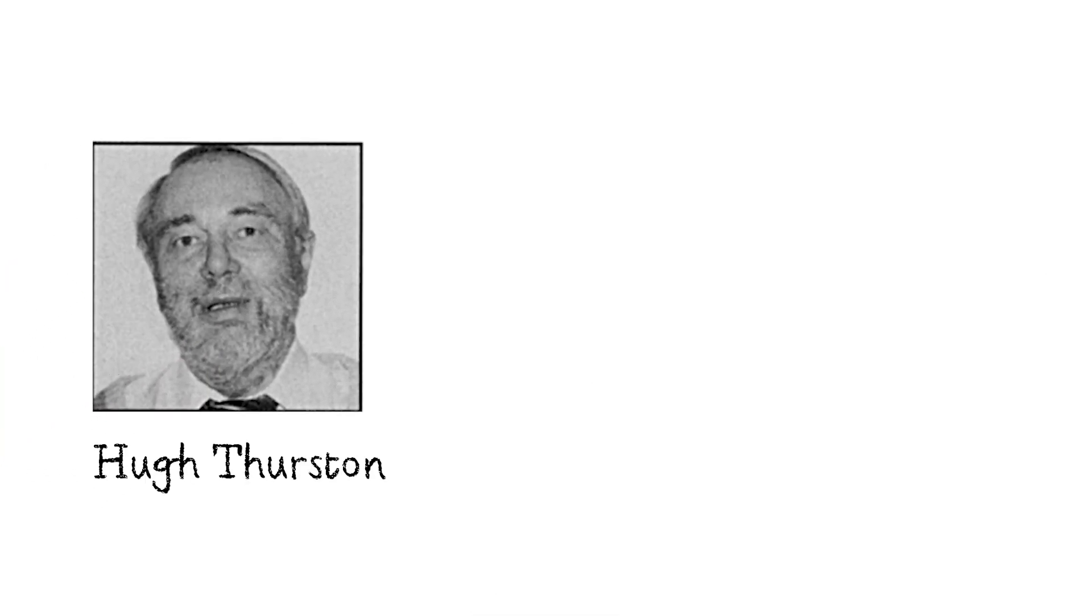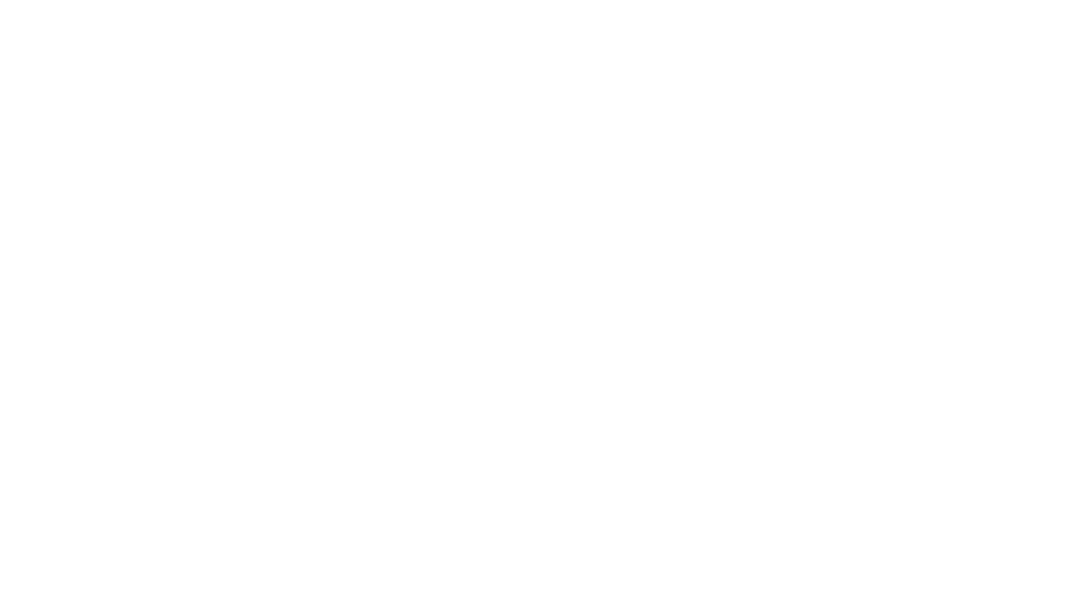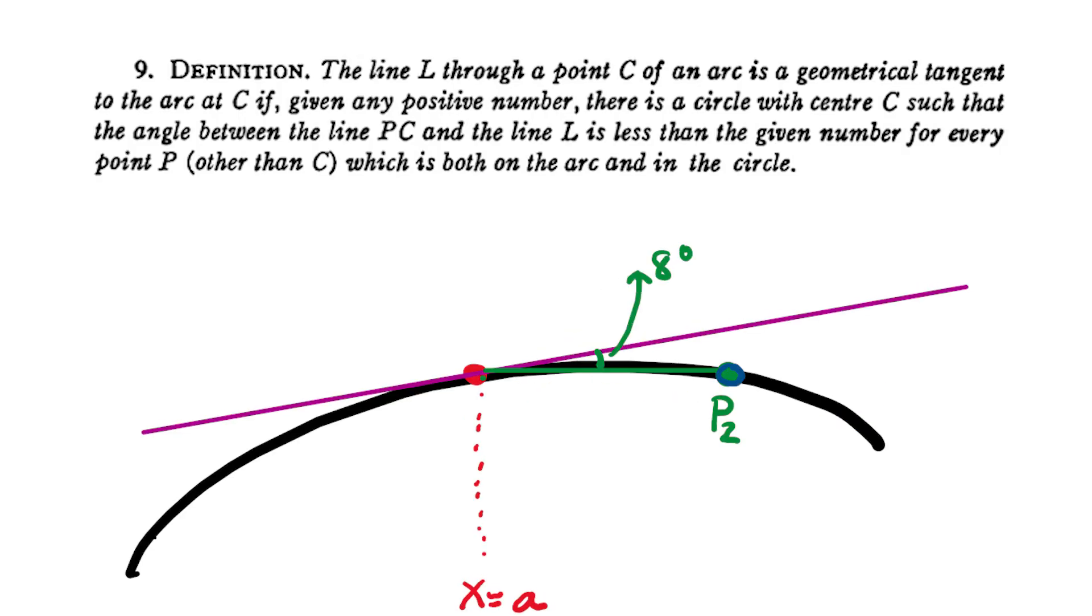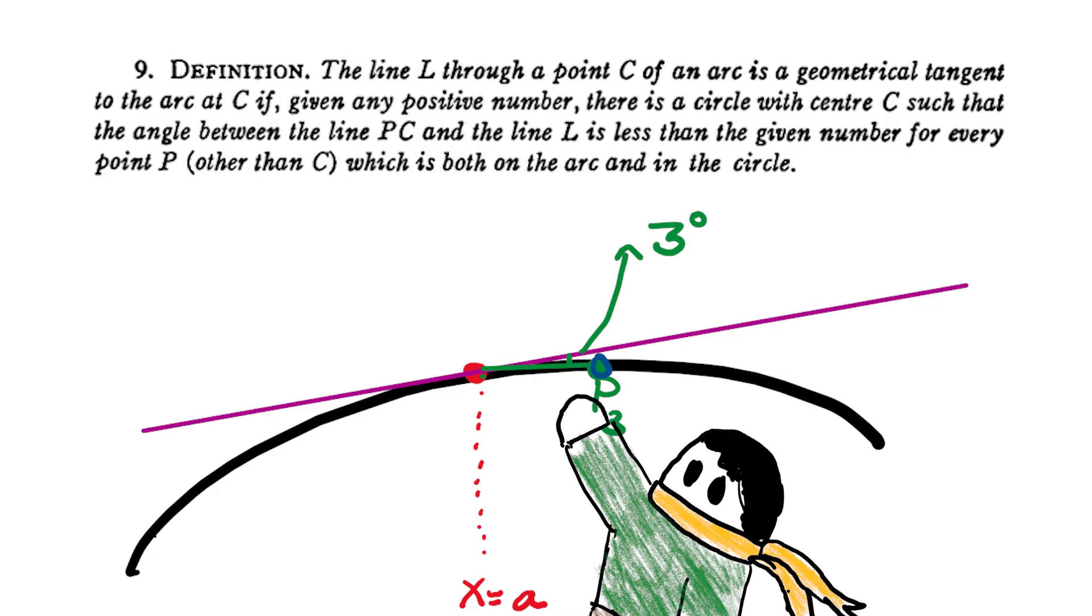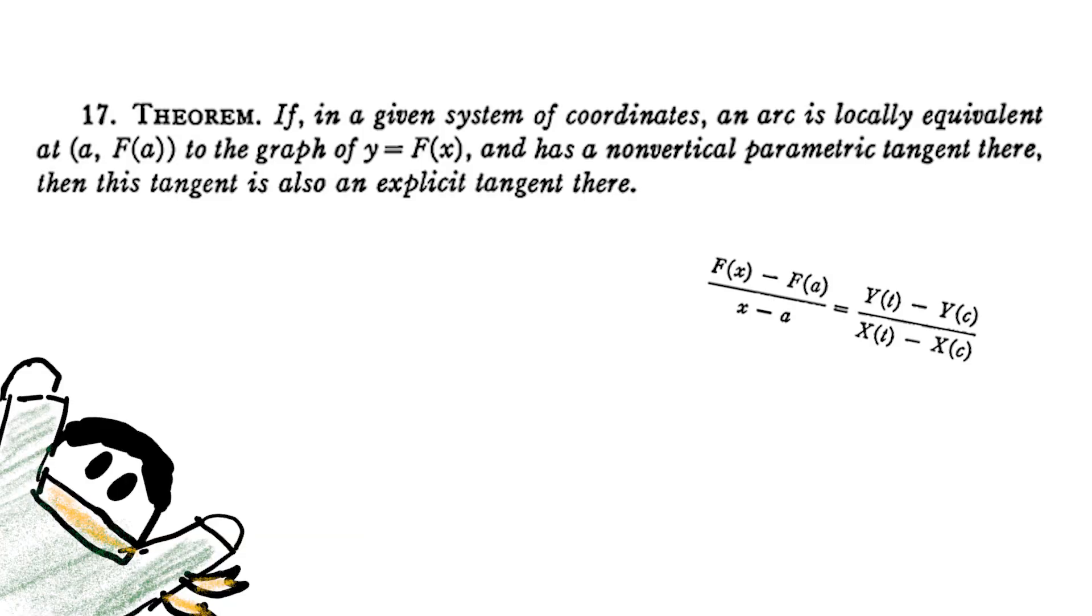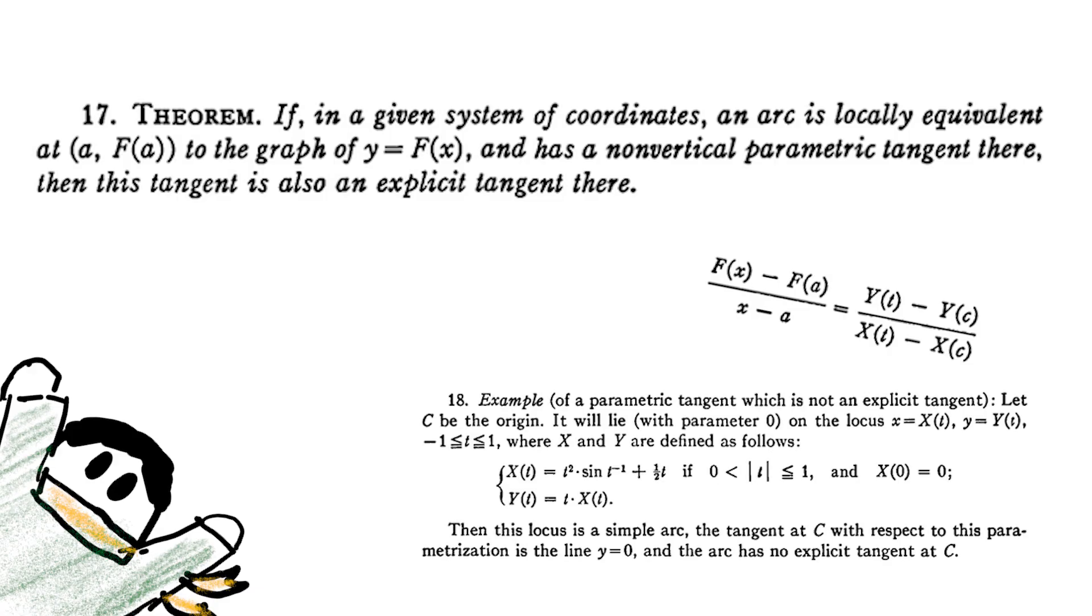Another slightly more geometric idea comes from Hugh Thurston's article on the definition of a tangent line. If you zoom into any nice enough function at a point x equal to a, you will see that it gets flatter and starts looking like its tangent line at that point. This definition roughly says that the closer the point of your choice p is to a, the lesser the angle this line will make to the tangent. This can then be used as a starting point to show that the tangent line defined by the derivative indeed satisfies this condition.